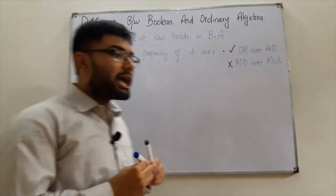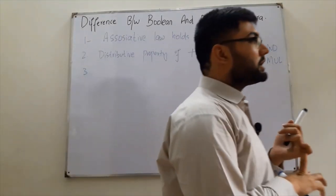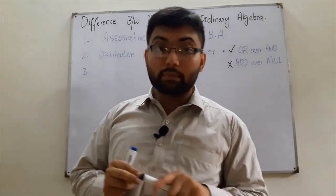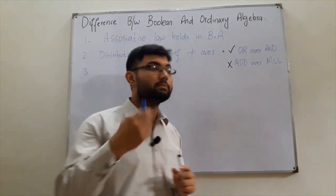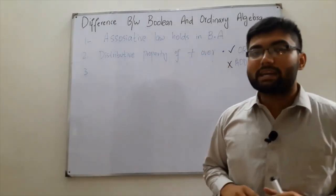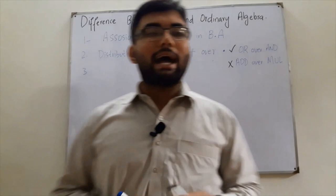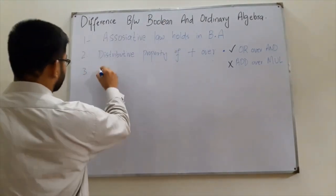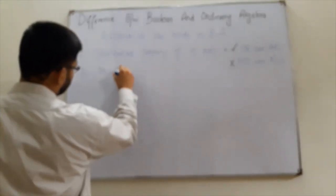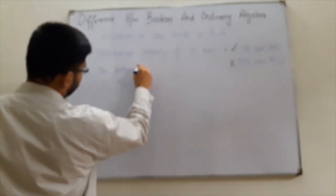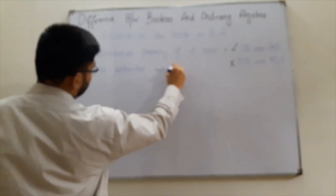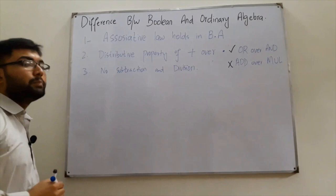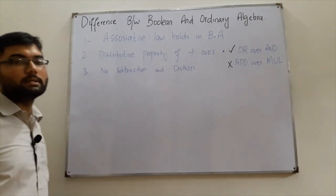The third point is that we do not have any multiplicative inverse or additive inverse in boolean algebra. We have identities — additive identity and multiplicative identity — but we do not have inverses, which means there is no subtraction and no division in boolean algebra.